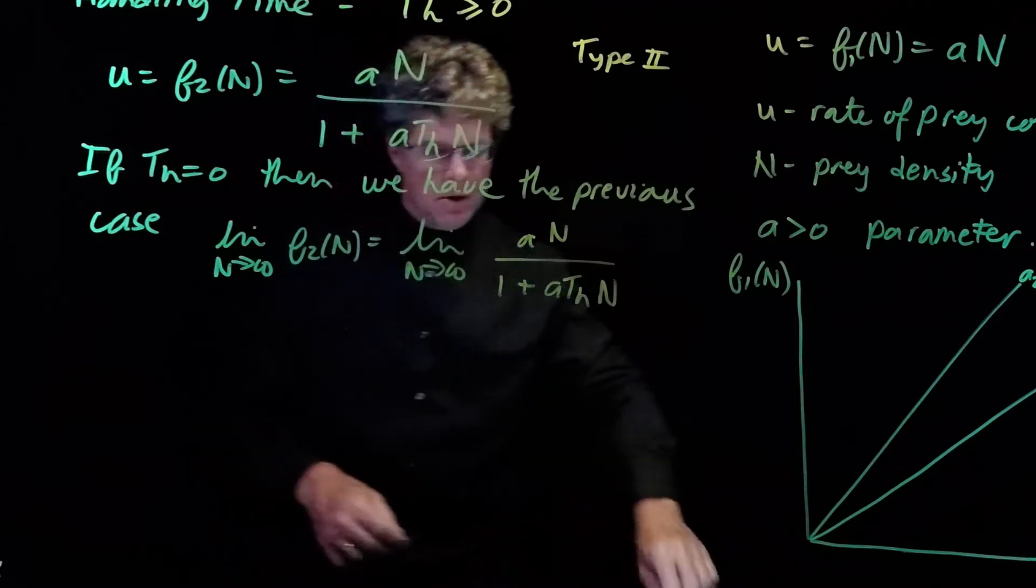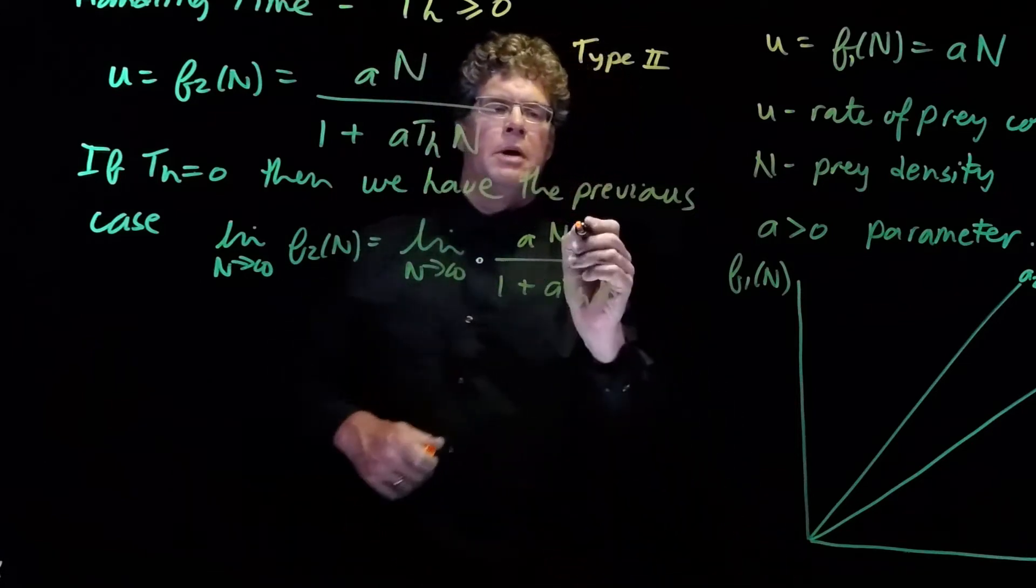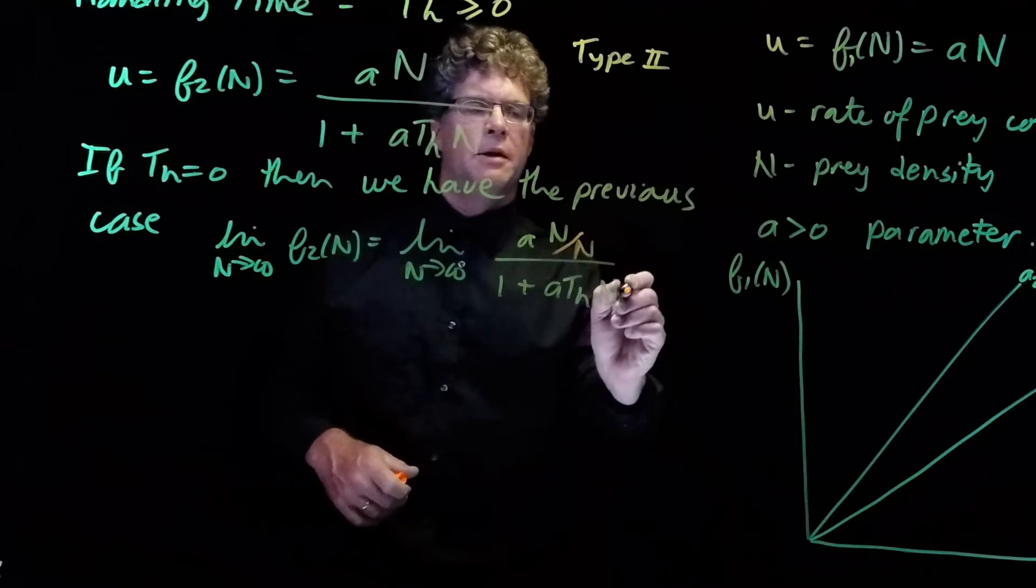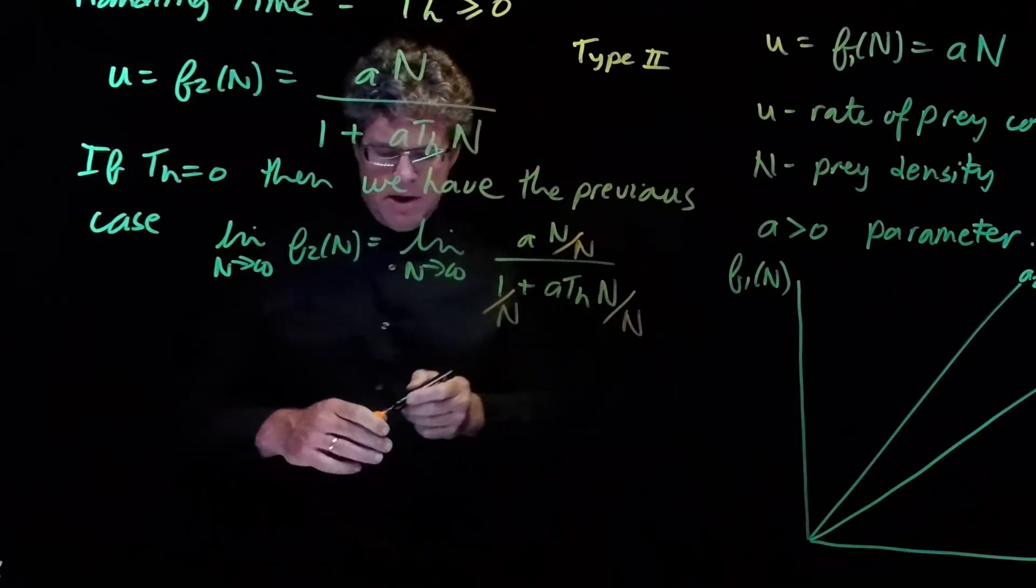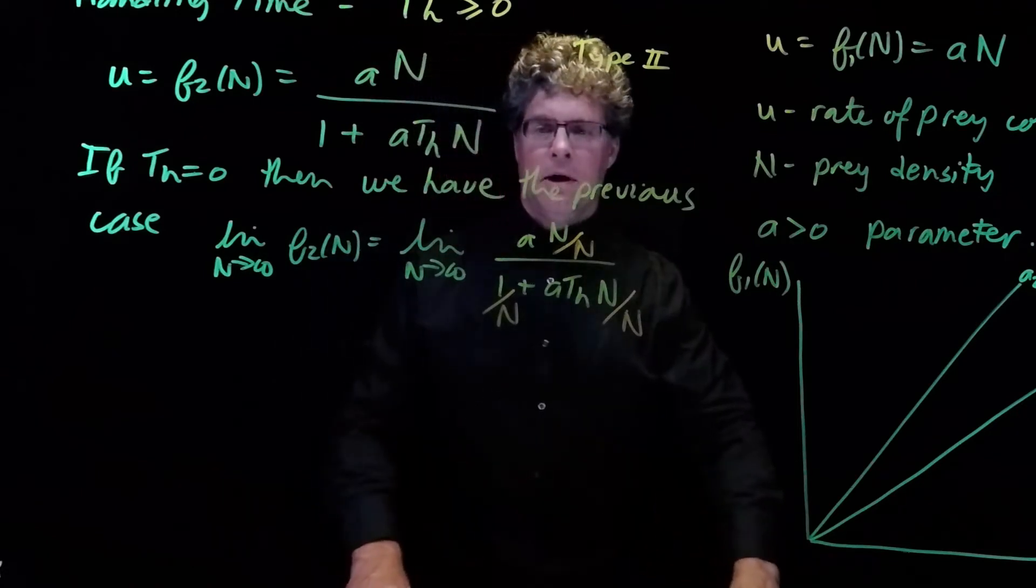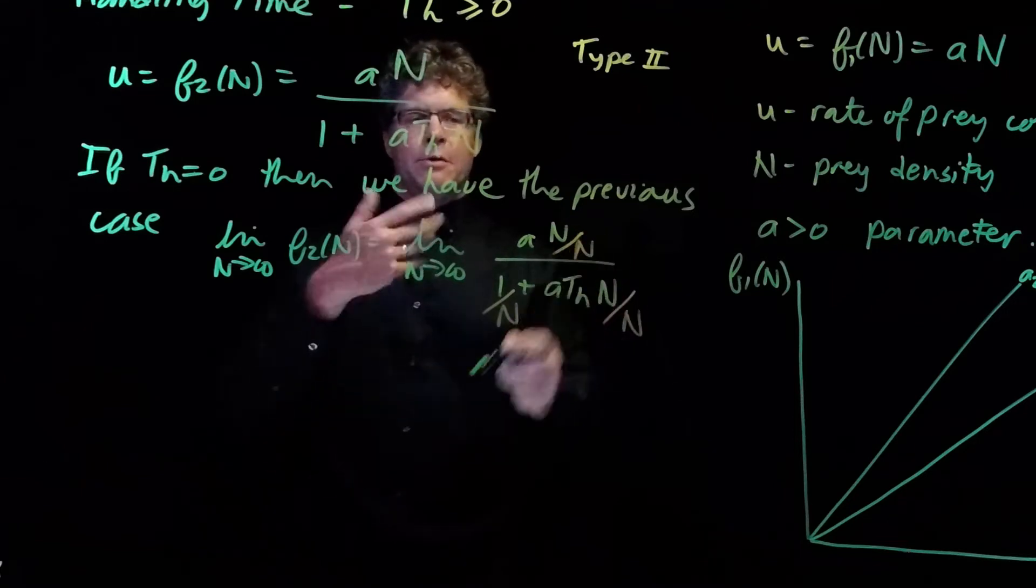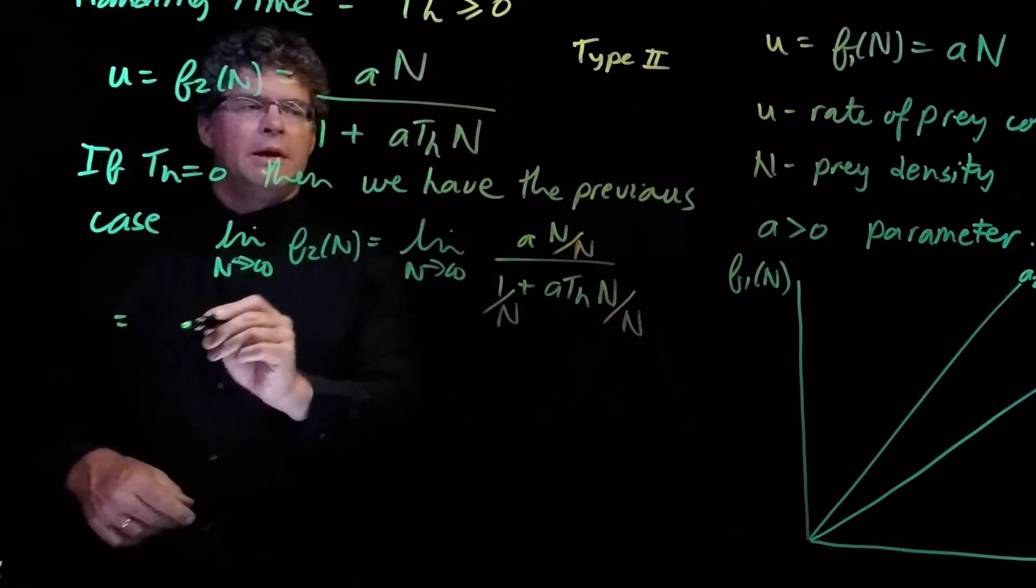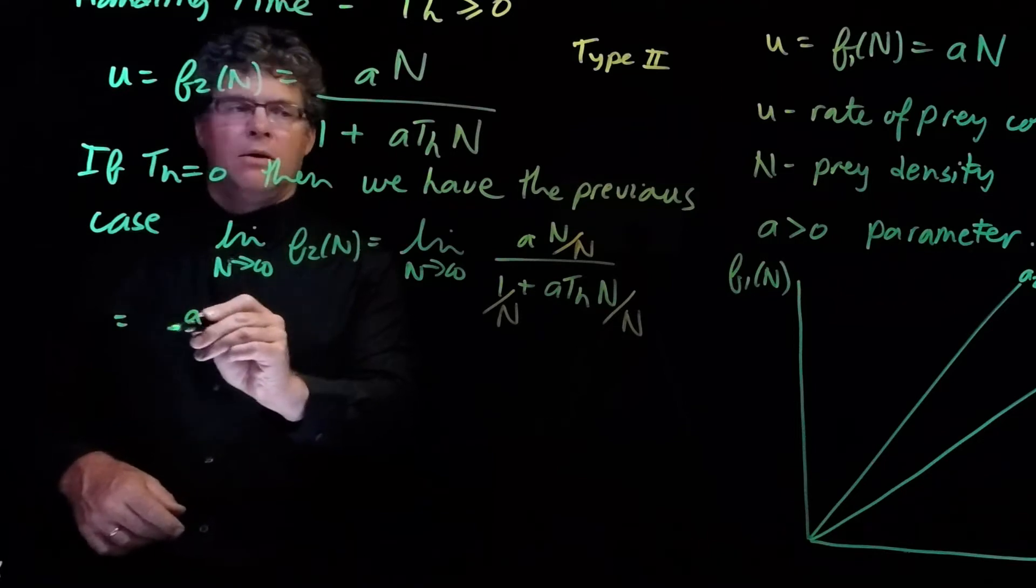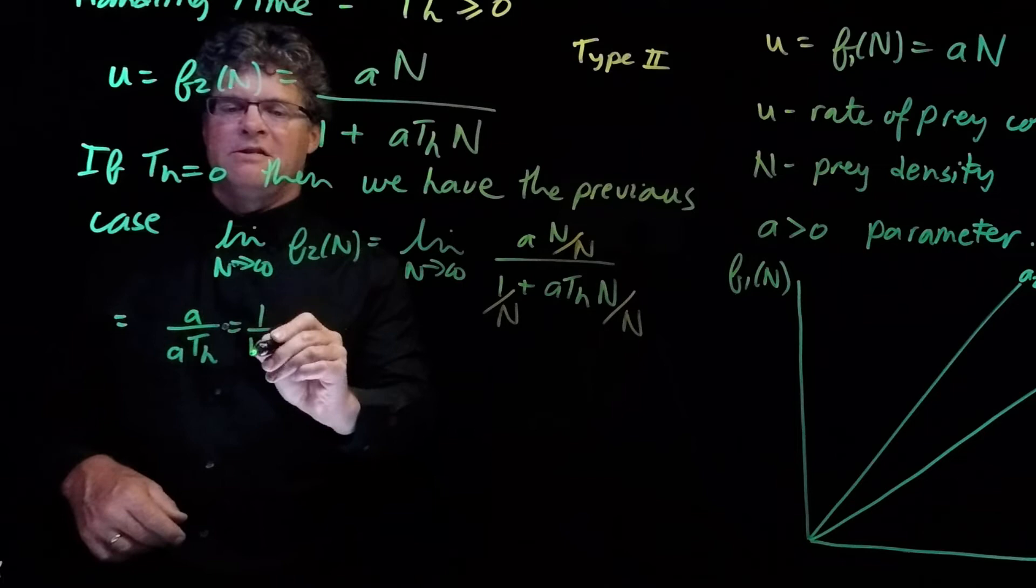a n over 1 plus a times T sub h times n. And what we can do here is divide the top and bottom by the highest power of n, which is n to the first power. And we can see that 1 over n is going to go to 0, and then n over n and the n over n are just going to cancel. So, this is equal to a over a T sub h, which is 1 over T sub h.